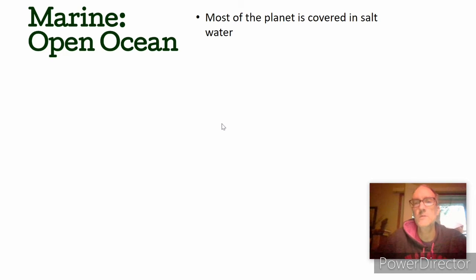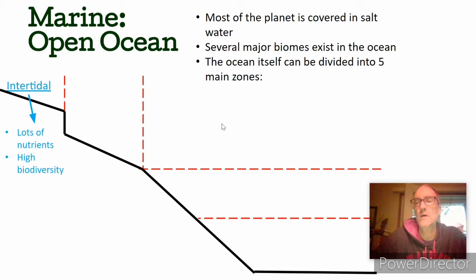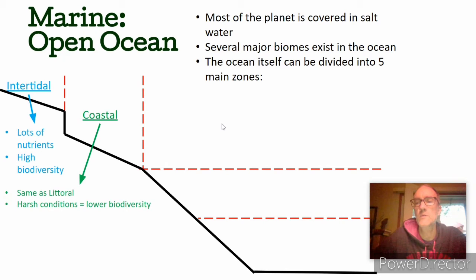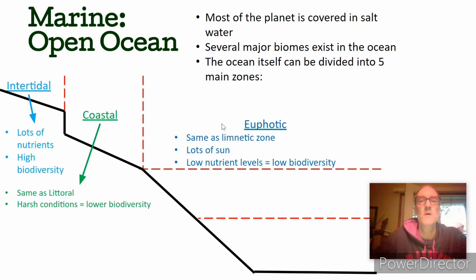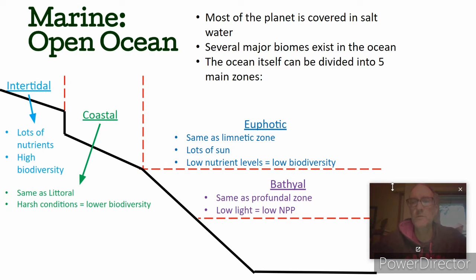Now we're going to talk about marine ecosystems. As we know, most of the Earth is covered by salt water. The ocean can be divided into five main zones. The first is the intertidal zone, with lots of nutrients and typically high biodiversity — it's a coastal zone similar to the littoral zone in lakes, but with usually harsh conditions including lots of waves and periodic drying, so organisms must adapt. The euphotic zone, located out in the middle, is similar to the limnetic zone — lots of sun but usually lower nutrient levels and consequently lower biodiversity.